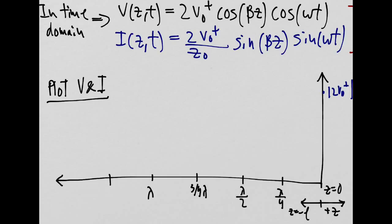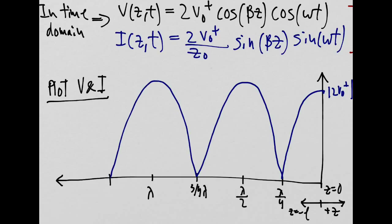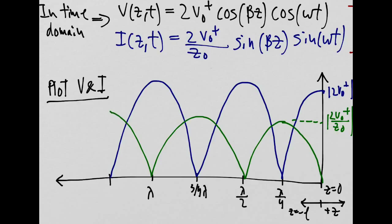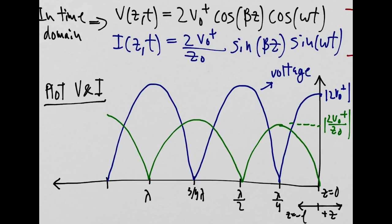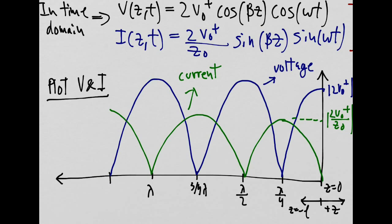The voltage obtains its maximum value right at the load, equal to 2V0 plus, and is zero a quarter wavelength away. The current, on the other hand, is a sine function, so it is zero at the load and obtains its maximum value a quarter wavelength away, equal to V0 plus divided by Z0. It makes sense that the current is zero right at the load because we have an open load with load impedance equal to infinity, while the voltage is equal to twice the incident voltage because the total voltage at the load equals the incident voltage plus the reflected voltage, and they add up in phase when z equals zero.